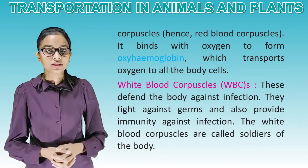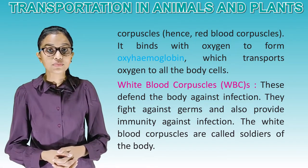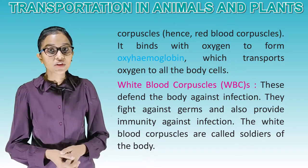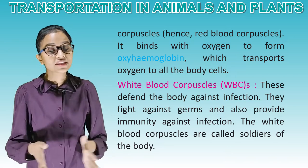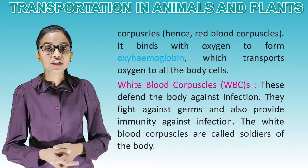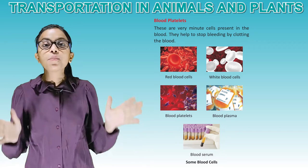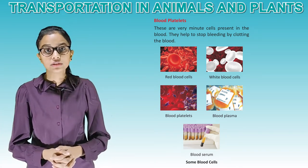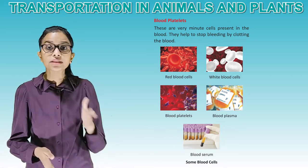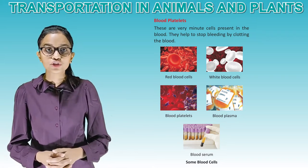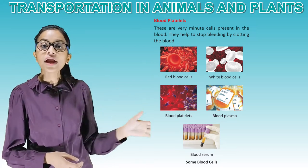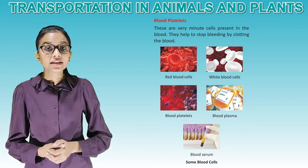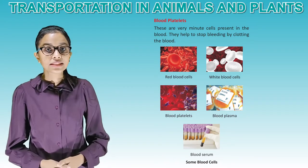White blood corpuscles, that is WBCs, defend the body against infection. They fight against germs and also provide immunity against infection. The white blood corpuscles are called soldiers of the body. Blood platelets are very minute cells present in the blood. They help to stop bleeding by clotting the blood. As you see in the picture, these are red blood cells, white blood cells, blood platelets, blood plasma, and blood serum.